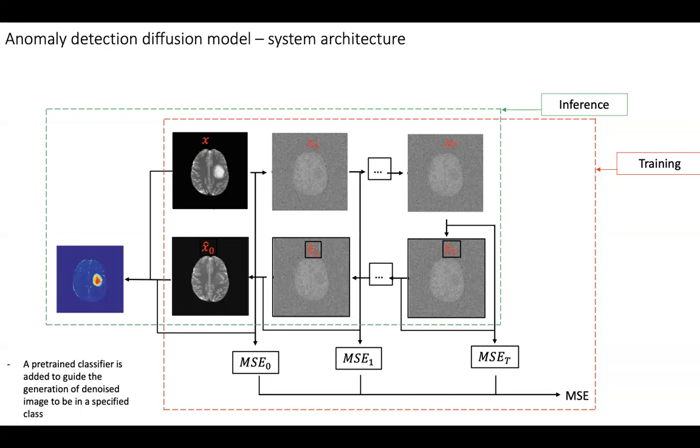So we incorporate a pre-trained classifier here. For this image we will assign it a label, for example the healthy label. That means for the reconstructed image x0 hat, we expect this image to be in the healthy class. This is achieved by the guidance from the pre-trained classifier. That means we use this image and the healthy label, treat it as a data point, and apply this classifier on top of it.